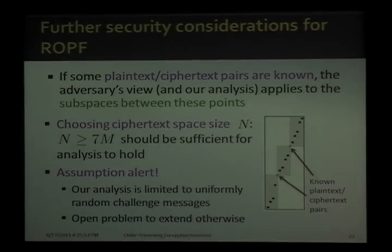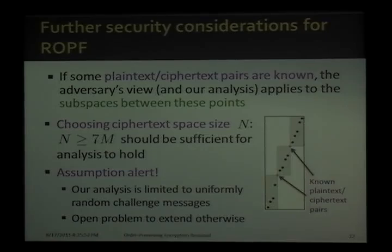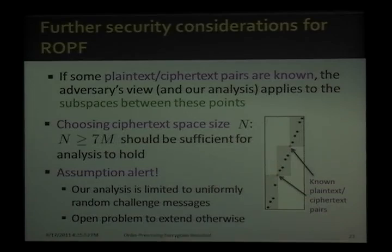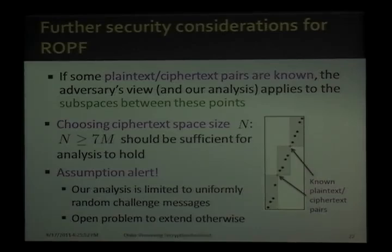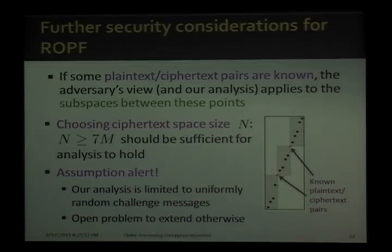We also have a few supplementary security considerations for ROPF. First, if some plaintext-ciphertext pairs are known to the adversary, then our analysis applies to the subspaces between these known points — each gray subspace behaves as if there's an ROPF scheme on it. Second, we show in the paper why choosing the ciphertext space size at least seven times the plaintext space size should be sufficient for our analysis to hold. Finally, we note a caution about our assumption that challenge messages come from a uniformly random distribution — extending this to other distributions is an open problem.